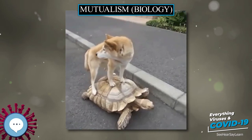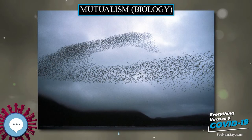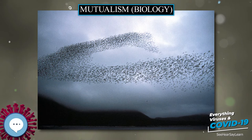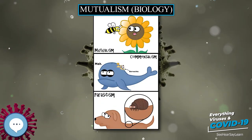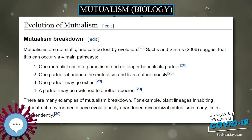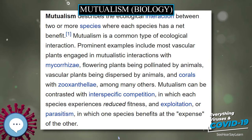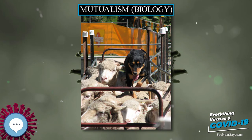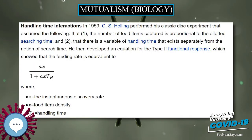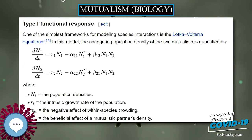Type I Functional Response. One of the simplest frameworks for modeling species interactions is the Lotka-Volterra equations. In this model, the change in population density of the two mutualists is quantified. Mutualism is in essence the logistic growth equation plus mutualistic interaction. The mutualistic interaction term represents the increase in population growth of species I as a result of the presence of greater numbers of species II, and vice versa. As the mutualistic term is always positive, it may lead to unrealistic unbounded growth, so it is important to include a saturation mechanism to avoid the problem.